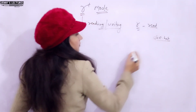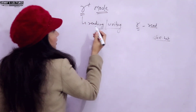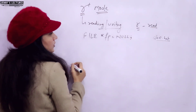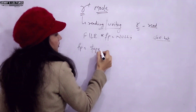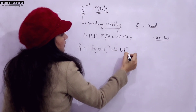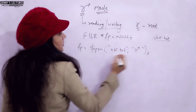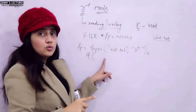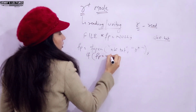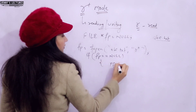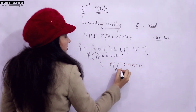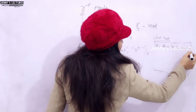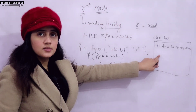Let's take an example. Suppose I have a file abc.txt on my hard disk and I want to read its content. First, create a file pointer initialized to null. Using fopen, open the file by providing the filename abc.txt and the mode r plus in double quotes. Then check if fopen returned null — if fp equals null, print an error and exit. Suppose the file contains the content 'Hi this is awesome'.